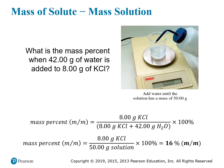For example: what is the mass percent when 42 grams of water is added to 8 grams of potassium chloride? In practice, you put the beaker on the scale, zero it out, add 8 grams of potassium chloride, then add water until the scale reads 50 — because 8 plus 42 is 50, so the total mass of solution is 50 grams. To calculate the mass percent: 8 grams of solute divided by 50 grams of solution, multiplied by 100, gives 16% by mass.